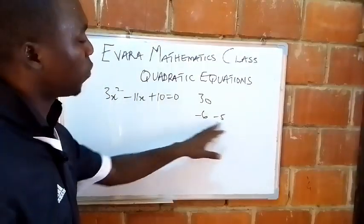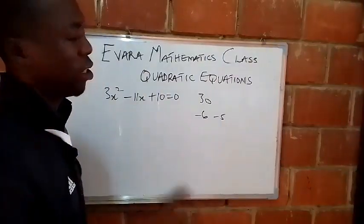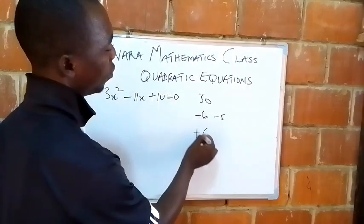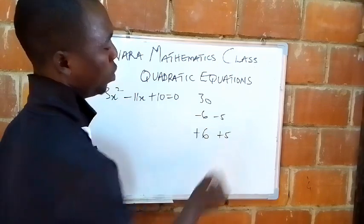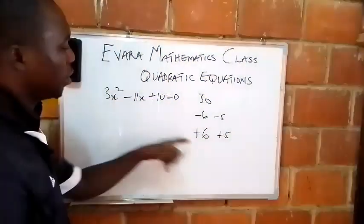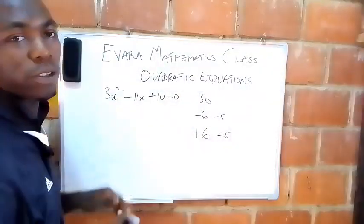So if the two factors are minus 6 and minus 5, the first thing to do is to change their sign. This one will become positive. This other one too will become positive. Then finally, you divide each of them by the coefficient of the squared letter.